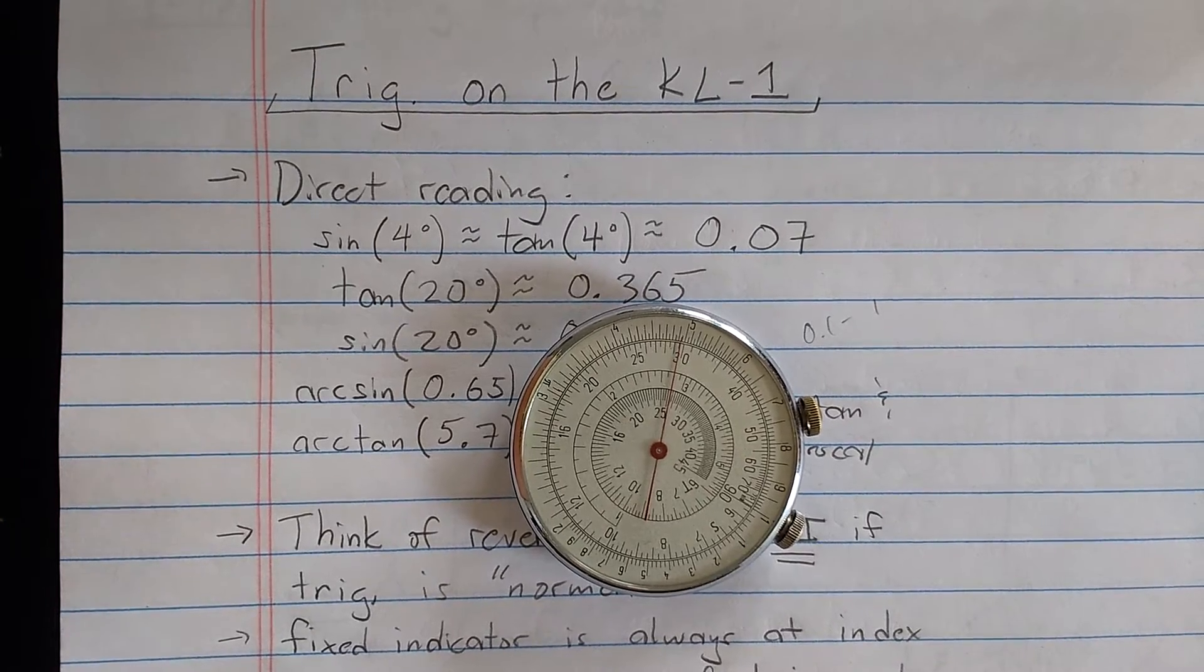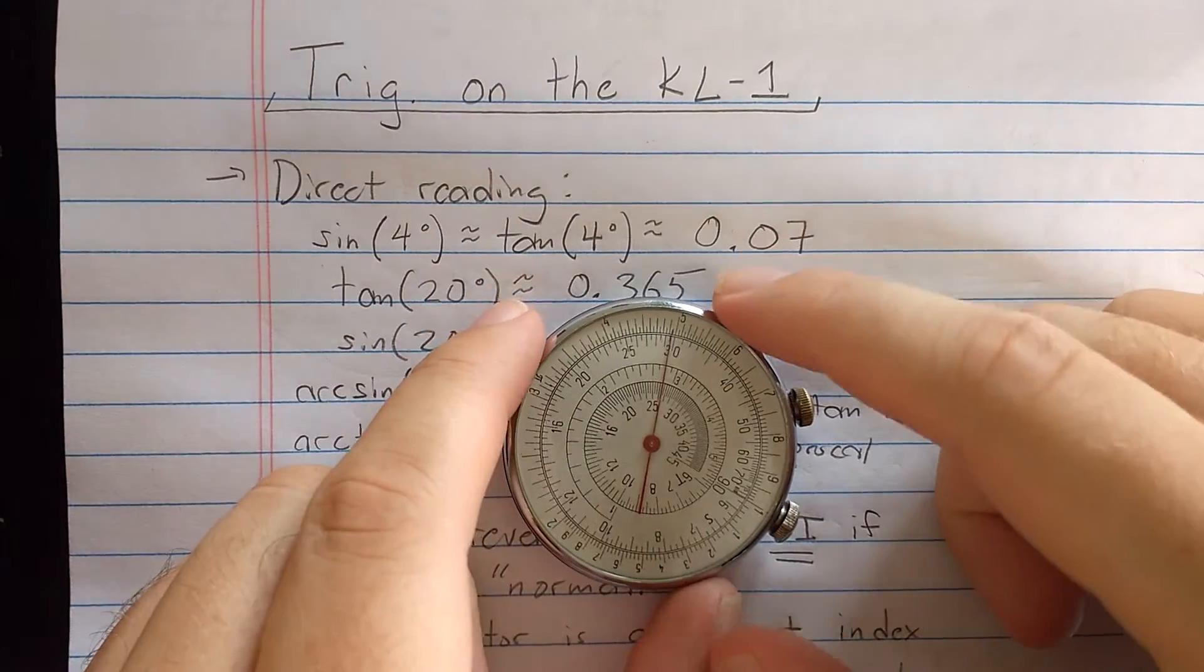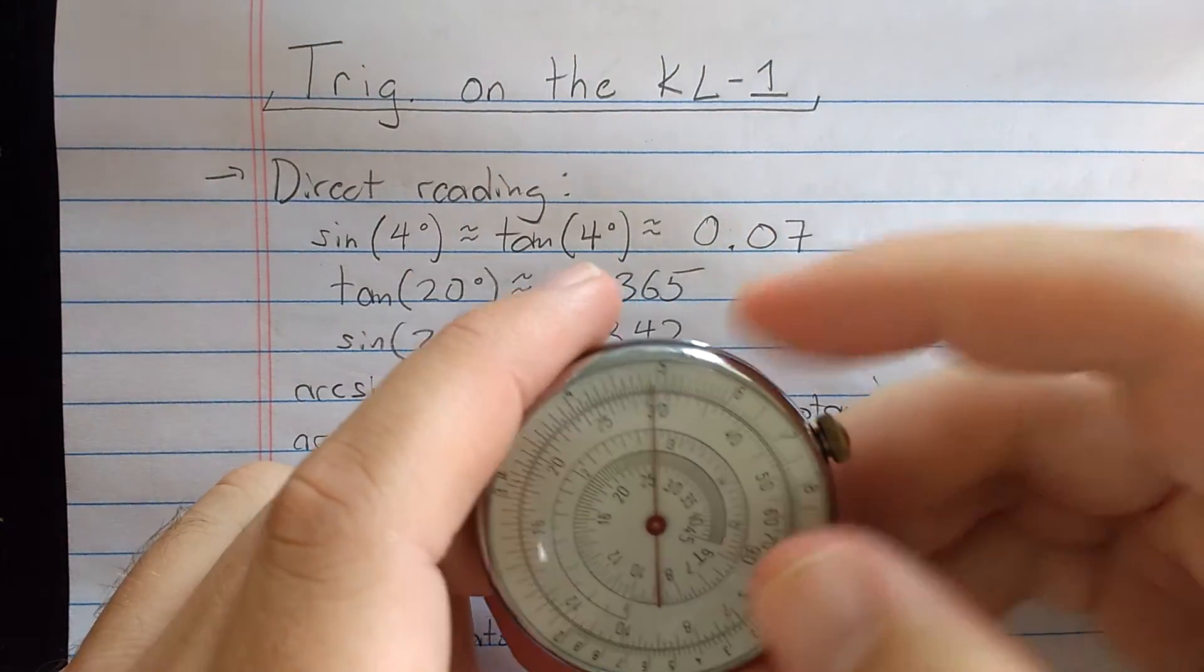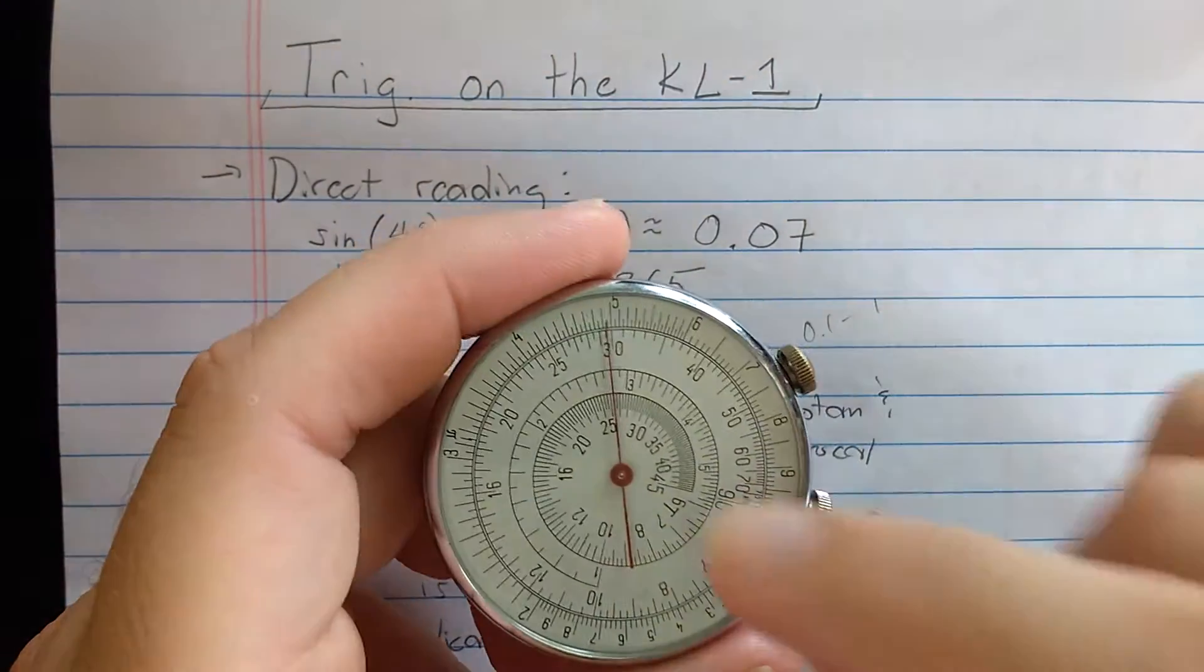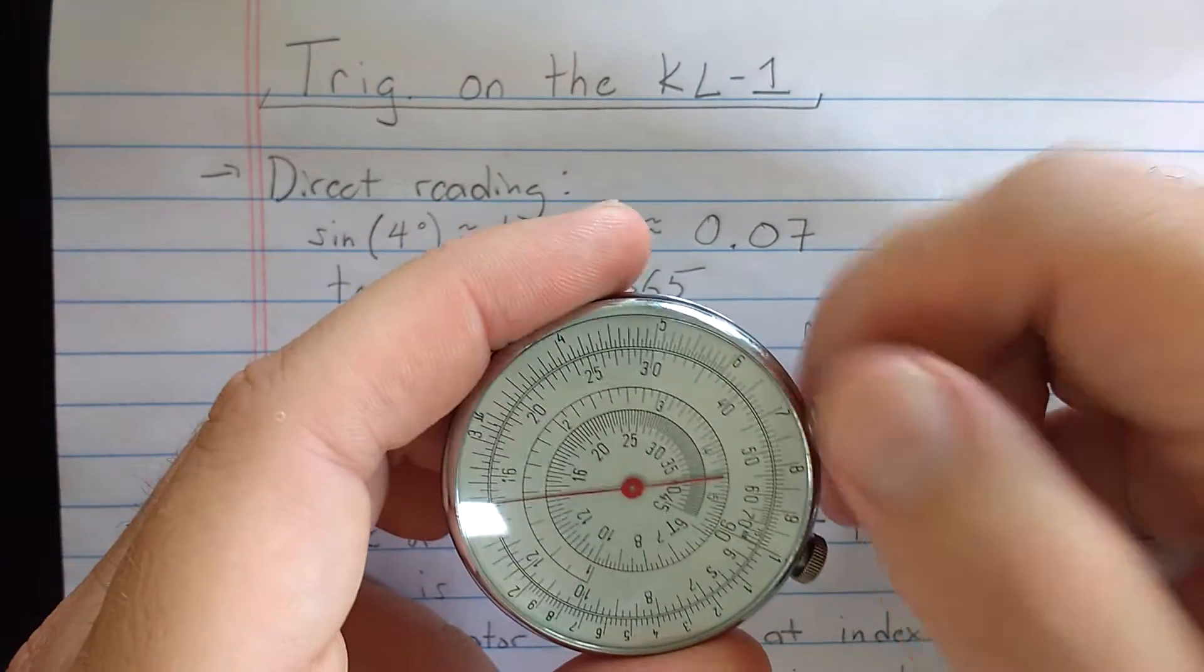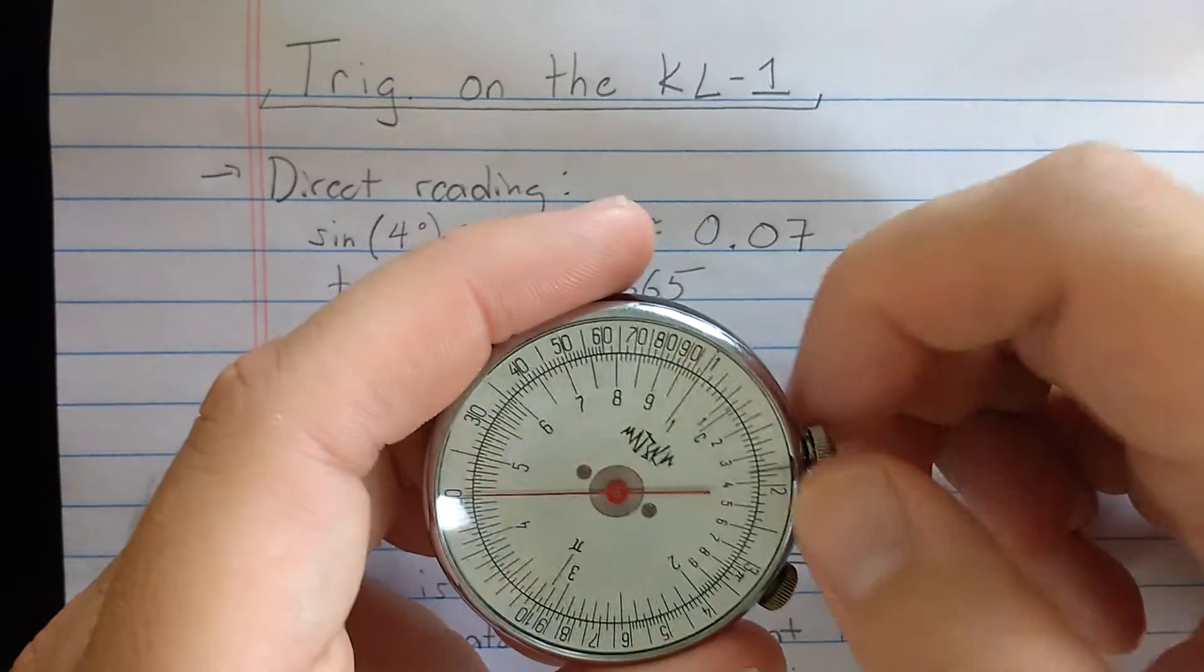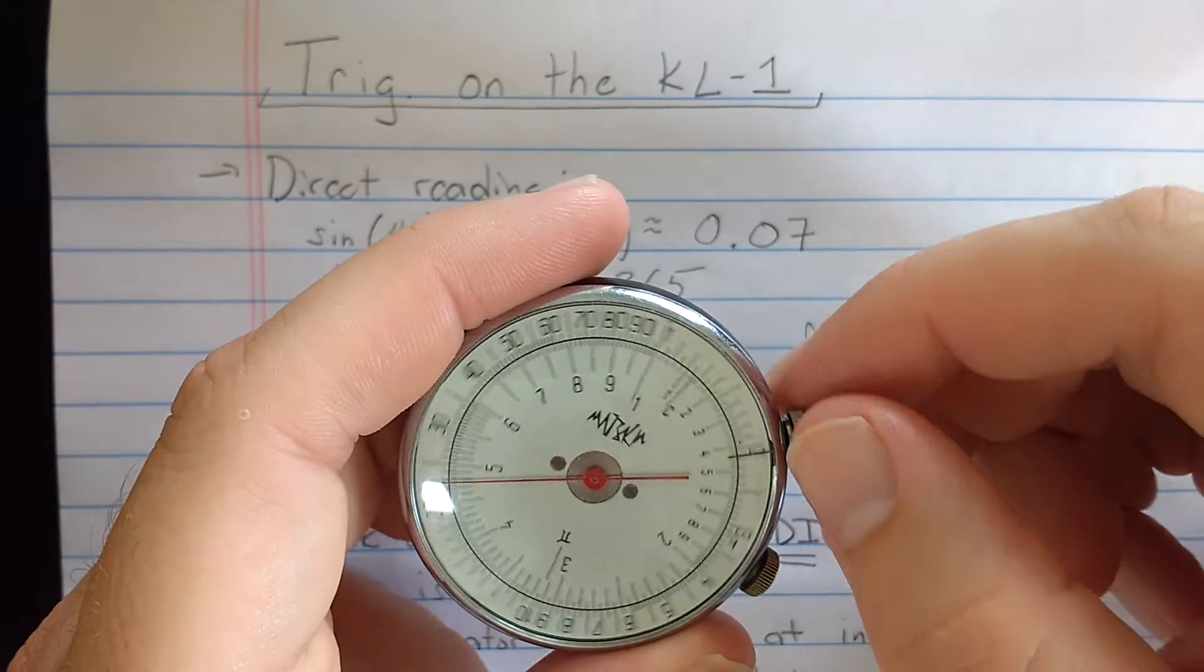Welcome back. As promised, this will be a video about using the reverse side of the KL-1 circular slide rule, which is the trigonometry side. I'm comfortable calling this a slide rule now because if you use the back side, the way it works is that the back side is fixed and only the needle moves. Think of the needle as the cursor. The front side can spin, leaving the needle alone. That's like moving the slide.